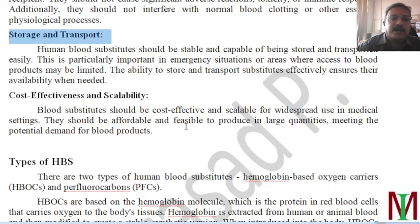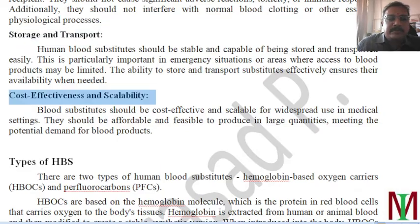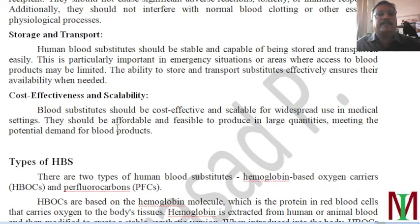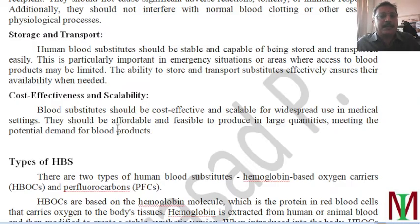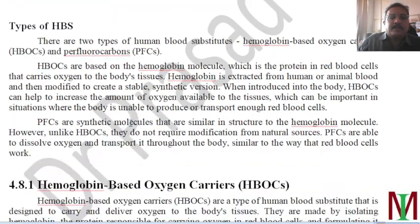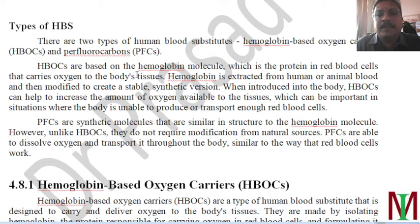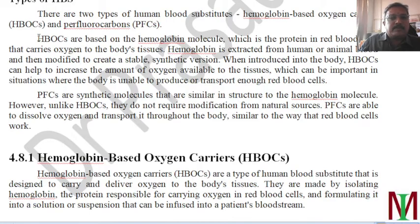Additional requirements include: the substitute must be safe for long-term storage and easy to transport; cost-effectiveness (if it is too costly, nobody will purchase it); and scalability, meaning large-scale production must be possible. There are two types of human blood substitutes currently available: hemoglobin-based oxygen carriers (HBOCs) and perfluorocarbons (PFCs).